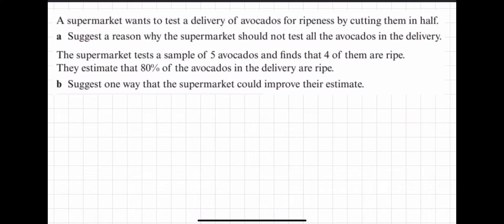Now let's look at breaking down some questions. A supermarket wants to test the delivery of avocados for ripeness by cutting them in half. Suggest a reason why the supermarket should not test all of the avocados in a delivery. Well obviously if it's a supermarket testing ripeness for avocados, you're going to destroy the avocados. The whole point of a supermarket is that you're going to sell stuff. If you've destroyed all of them, you've got none left to sell.